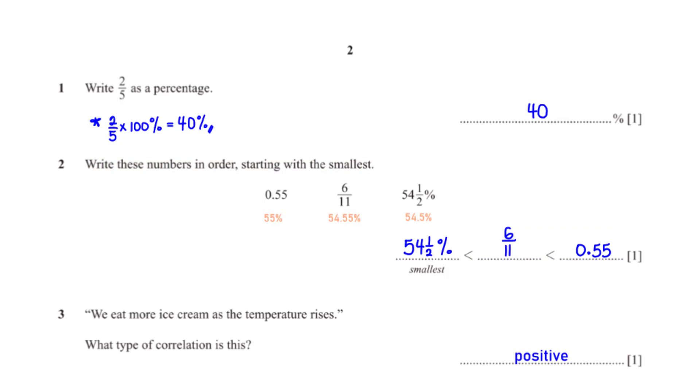We eat more ice cream as the temperature rises. What type of correlation is this? Since the amount of ice cream we eat increases as the temperature also increases, then this type of correlation is positive.